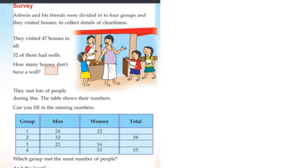Ashwin and his friends were divided into four groups and they visited houses to collect details of cleanliness. They visited 47 houses in all. 32 of them had wells. How many houses don't have a well?